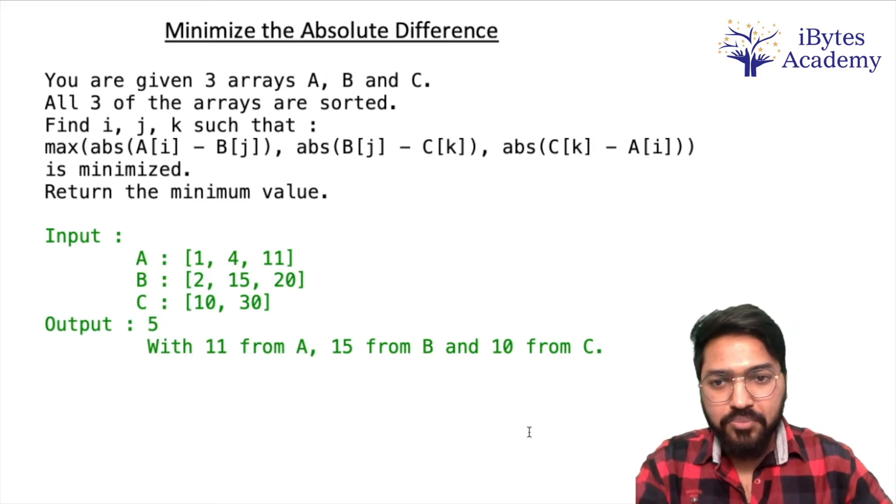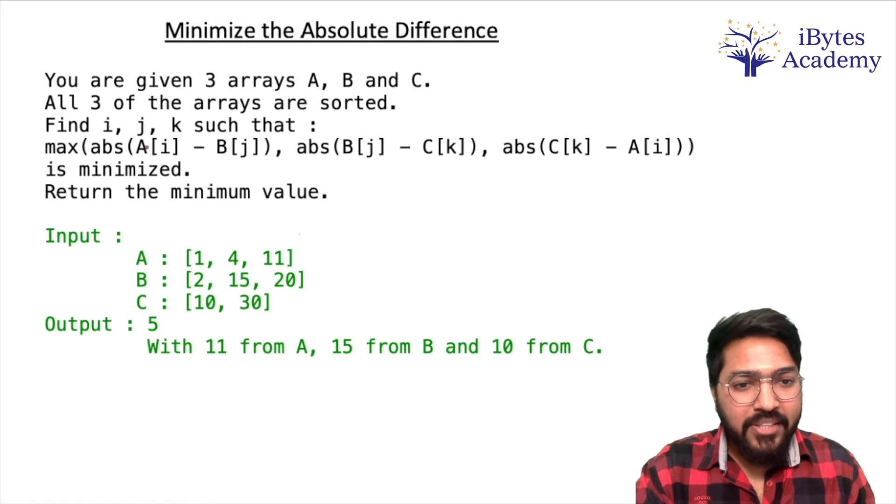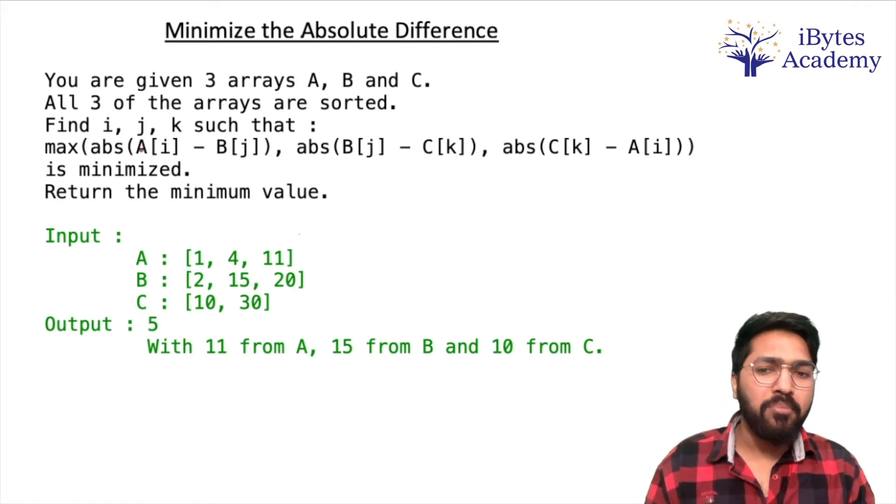Let's read the problem statement first. You are given three arrays A, B, and C. All three of the arrays are sorted. Find i, j, and k such that maximum of abs(A[i] - B[j]), abs(B[j] - C[k]), abs(C[k] - A[i]) is minimized. And we have to return the minimum value.